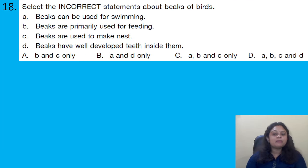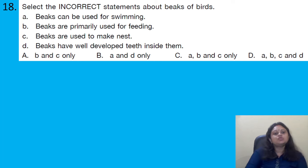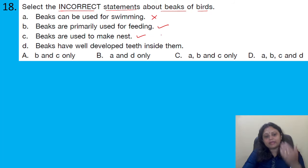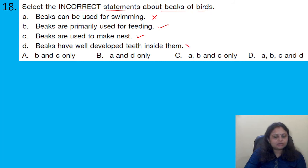Select the incorrect statements about beaks of birds. Option A: beaks can be used for swimming — incorrect. Option B: beaks are primarily used for feeding — correct. Option C: beaks are used to make nests — correct. Option D: beaks have well-developed teeth inside them — incorrect, as birds do not have teeth. We have to find the incorrect statements, so the answer should include A and D.